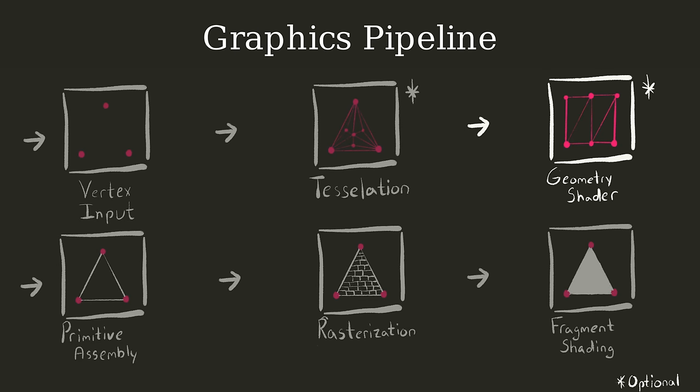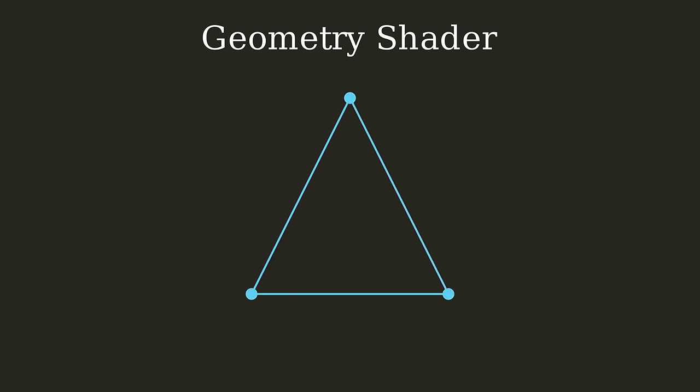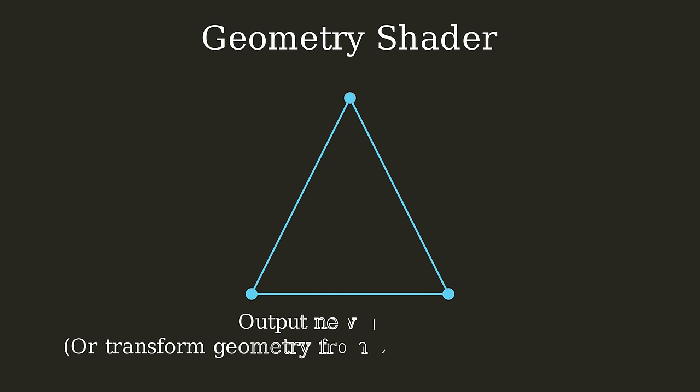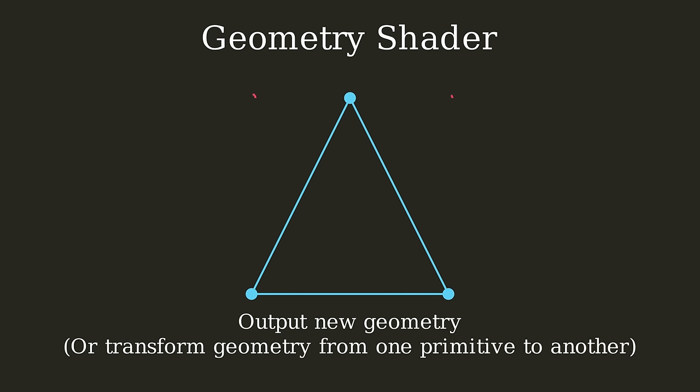After the optional tessellation stage is the optional geometry shader processing stage, where you can dynamically add or remove primitives and emit completely new geometry on the GPU. As far as I know, this stage has shown detrimental performance and is not typically used in real-time applications like games.